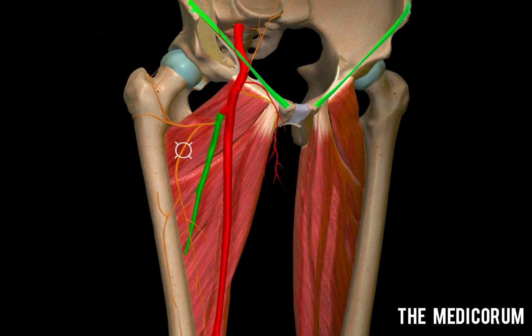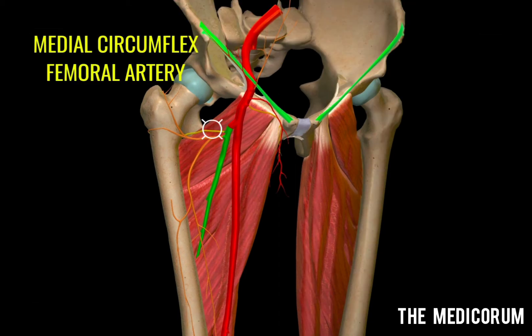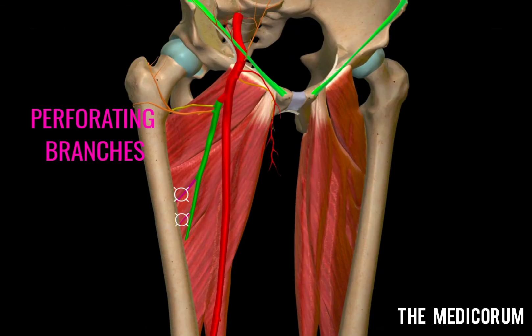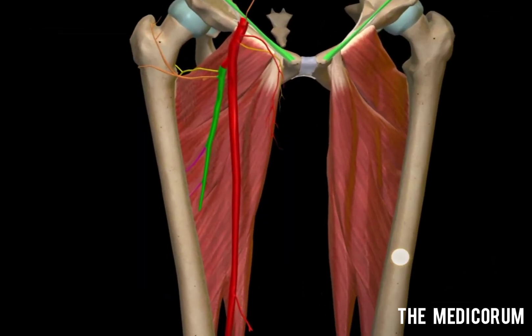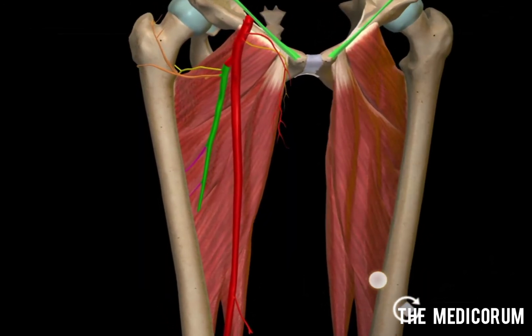If there is a lateral circumflex femoral artery, then there is also a medial circumflex femoral artery. Hence, the second branch will be the medial circumflex femoral artery. Then the profunda femoris artery gives four perforating arteries — it gives three directly, but the fourth is the profunda femoris artery itself, which ends as a perforating branch. This is how the perforating branches look.